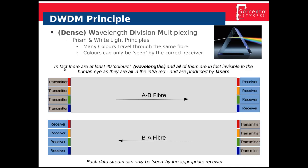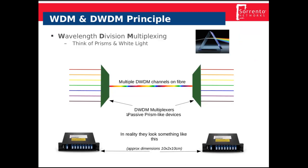WDM is as if you've got many fibres inside the one actual physical fibre, and they're completely independent of each other. As you often see in DWDM diagrams, we have red, orange, yellow, green, blue, indigo, and violet being combined onto one fibre. The combiner — shown here as a green block — is like a prism combining all the colours together, and at the other end another prism splits them all apart again.